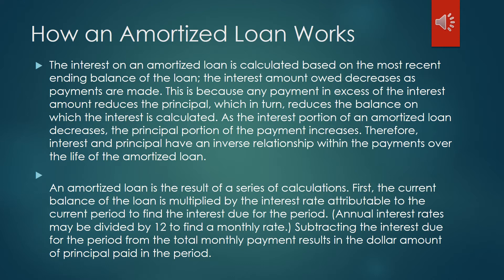An amortized loan is the result of a series of calculations. First, the current balance of the loan is multiplied by the interest rate attributable to the current period to find the interest due for the period. The interest rate will depend on what the current rate the bank or financing institution may offer. Annual interest rates may be divided by 12 to find a monthly rate. Subtracting the interest due for the period from the total monthly payment results in the peso amount of principal paid in the period. Therefore, after a certain amount of time, the last loan payment will completely pay off the balance.